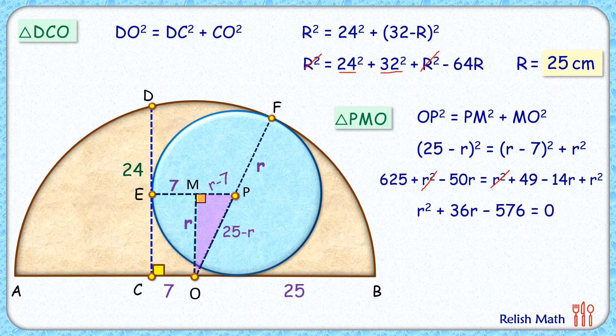So we'll simplify it. We'll get a quadratic. So this quadratic will solve by factorization. Now here we'll ignore the negative value of r, and we'll get small r, that's the radius of this green circle, as 12 centimeters. And that's our answer.